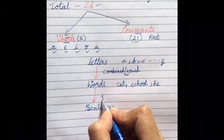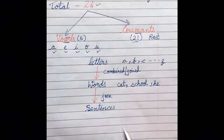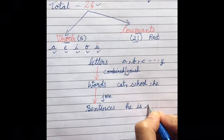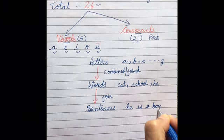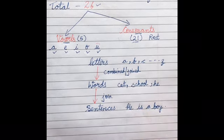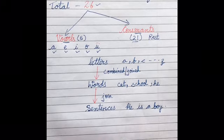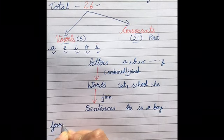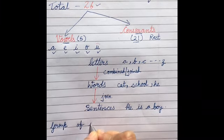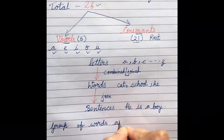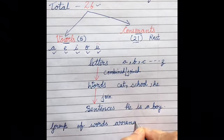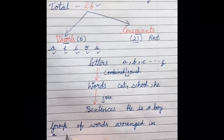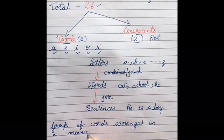Now if you combine or join different words, you will get sentences. Like 'he is a boy' — so 'he is a boy' is a sentence. So what are sentences? Sentences are a group of words arranged in a meaningful way.